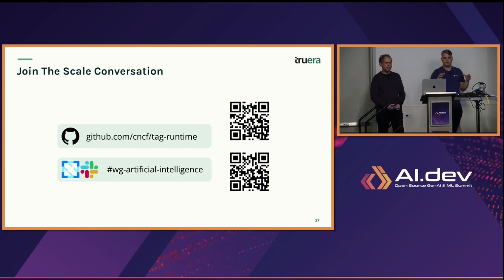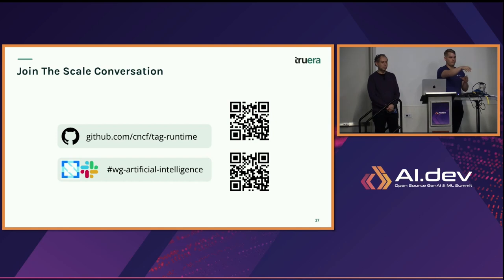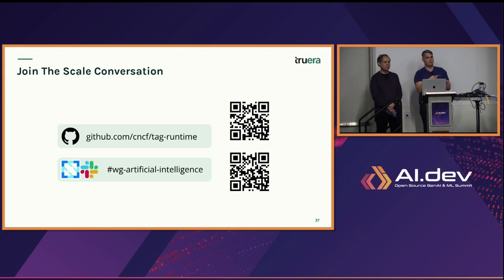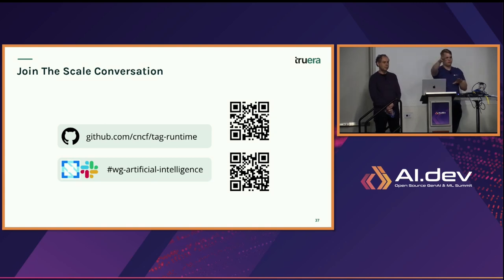The groundedness check we're doing is specifically related to the context that's being retrieved and passed to the LLM. As part of your RAG, you're doing retrieval to your vector database, getting context chunks back, and the LLM forms a response from those chunks. We're checking to make sure the response is backed up by those context chunks. But you could definitely do more of an external check — is it backed up by those context chunks, and is it also backed up by some external context? That'd be really cool.